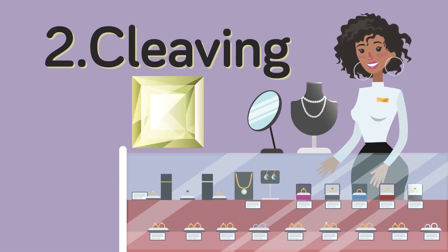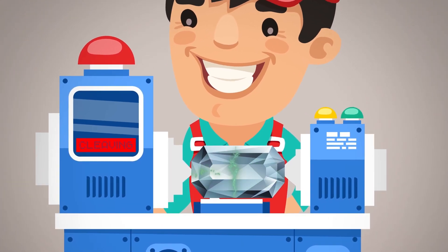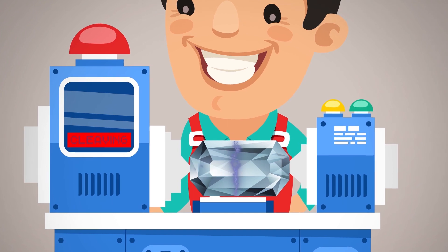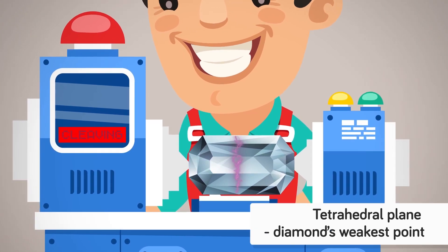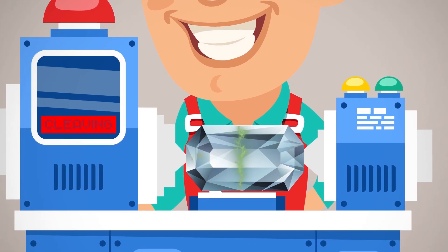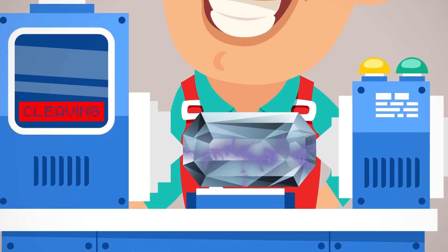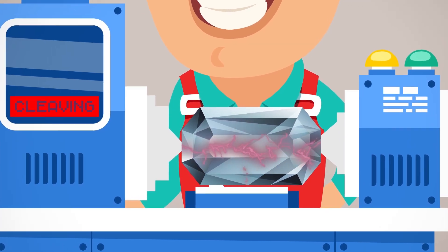2. Cleaving. This technique cuts the rough diamond down to a manageable shape and size. The cutter must cleave along the weakest points known as the tetrahedral plane. A cement or wax mold holds the diamond in place as the cutter makes a sharp cut along the weakest groove. The cutter then puts a steel blade in the groove and strikes it firmly, cutting the rock into two pieces.